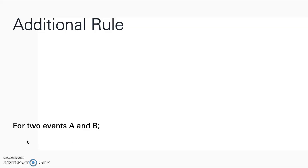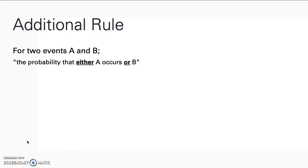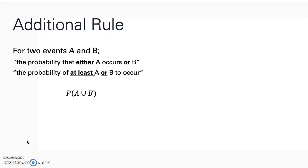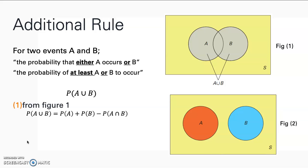The addition rule allows us to find the probability of the union of two or more events. If we have two events A and B and would like to know the probability that either A or B occurs — the probability of at least A or B occurring — if A and B are not mutually exclusive, the formula accounts for their intersection. But if events A and B are mutually exclusive, the probability that either A or B occurs simplifies accordingly.